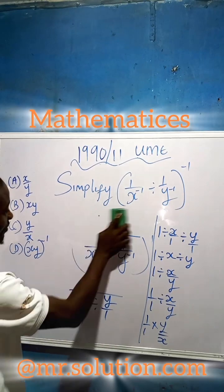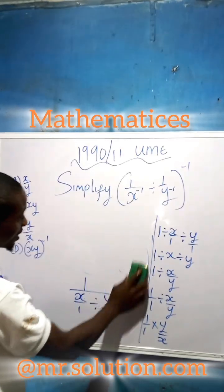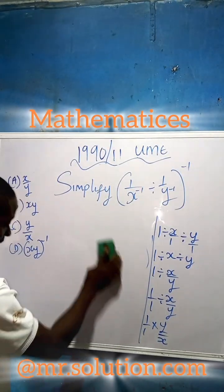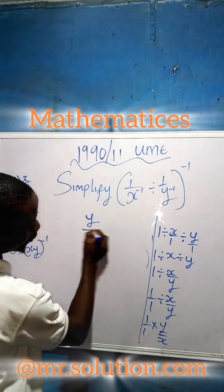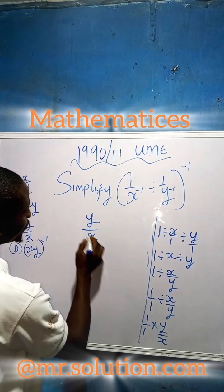Now we stop here. We have one times y, which gives us y over x. So is there anything you can do again? No. And this becomes our final answer, which is option C.